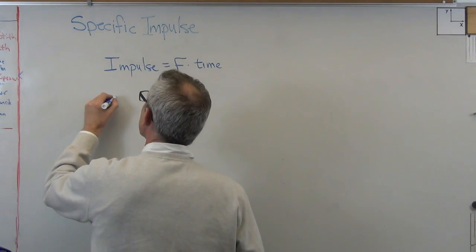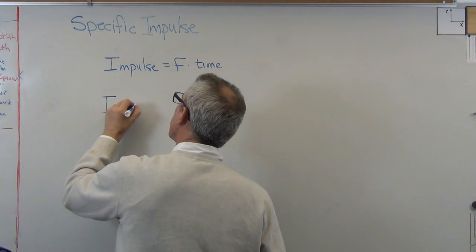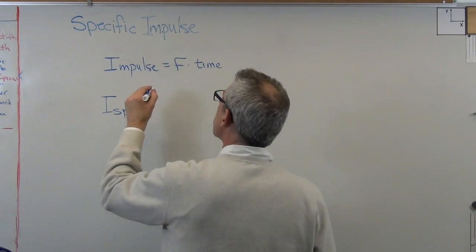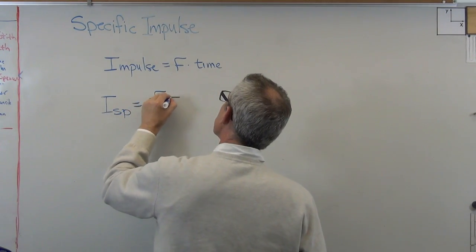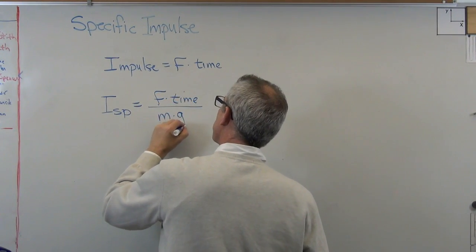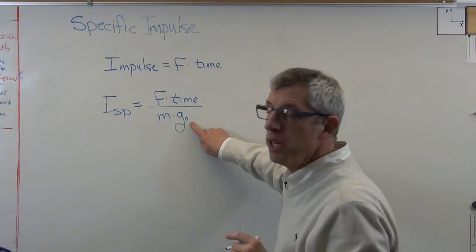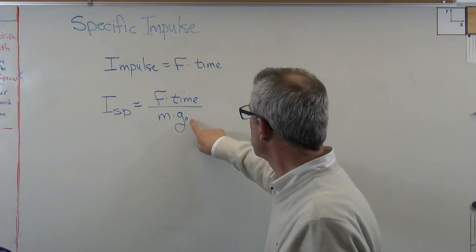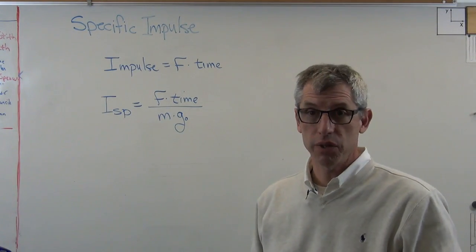All right, so specific impulse, and they call that ISP, you'll see that a lot, is impulse per unit weight. So what it'll look like is force times time divided by mass times the acceleration of gravity. And I'm going to call this g sub zero, because since we're talking about rockets it probably matters where we are. This g sub zero means at the surface of the earth.